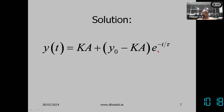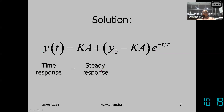When t equals infinity, e raised to minus infinity becomes 0, so this term vanishes and the final value equals k·A — proportional to the input step. In between, the response is governed by the exponential term e raised to minus t over tau, so it exponentially approaches the final value. The initial value is y0, and it slowly increases or decreases to the final value k·A. So k·A is the steady response and the exponential term is the transient response.